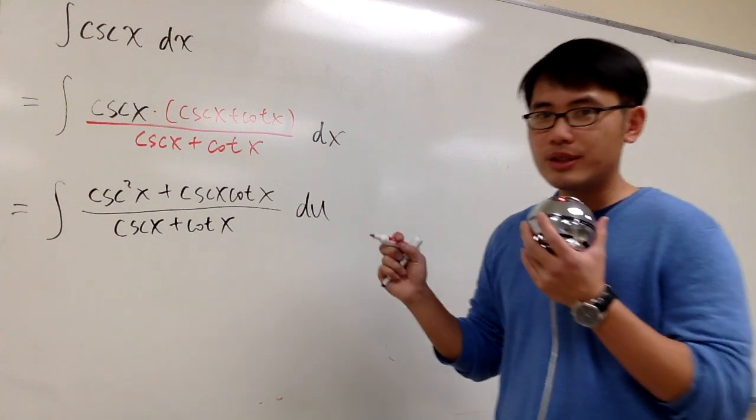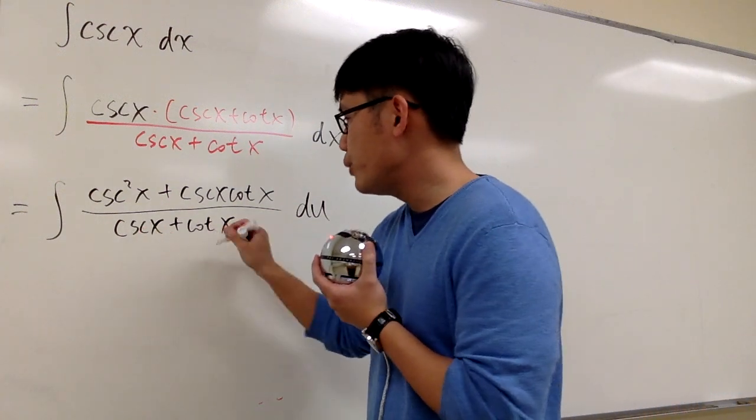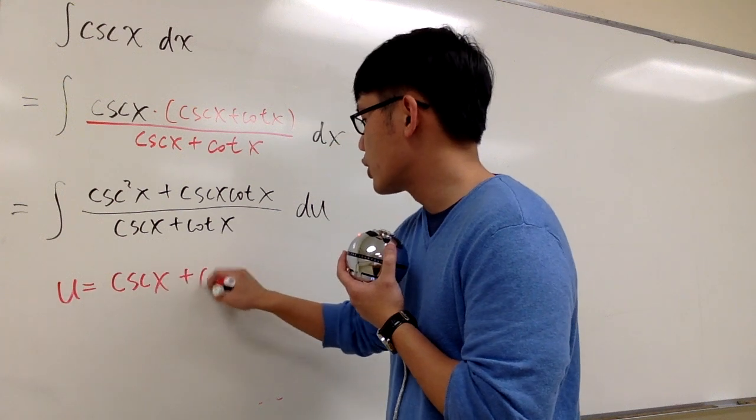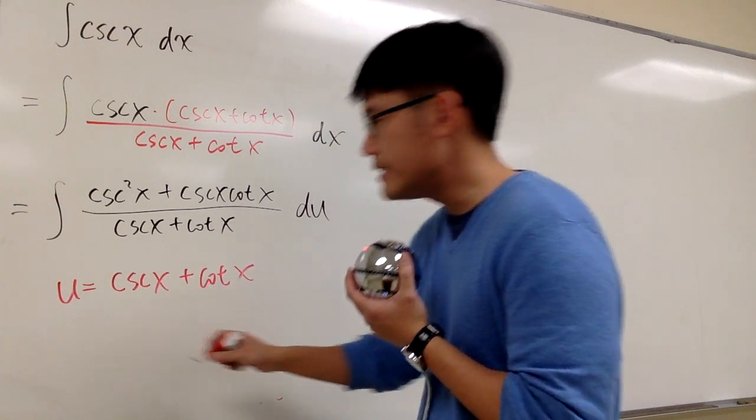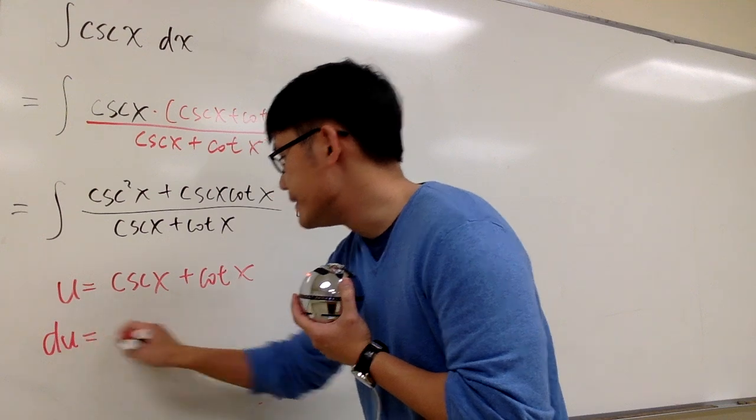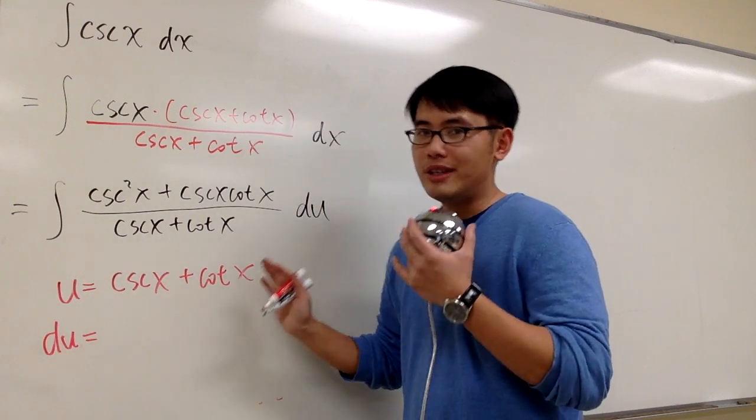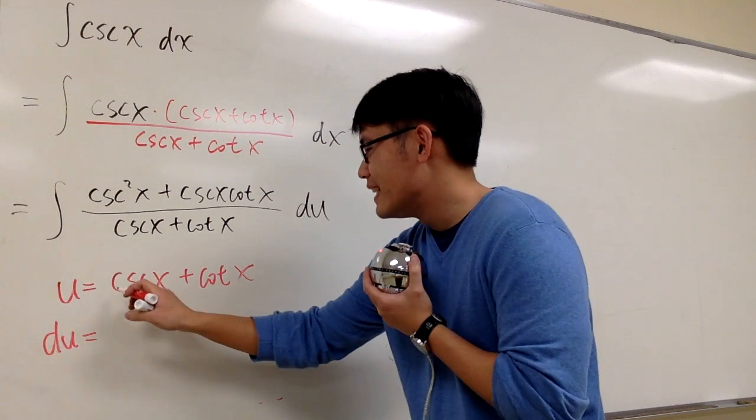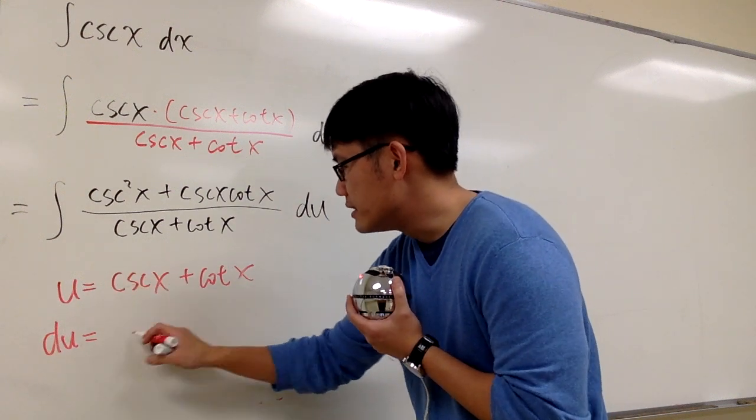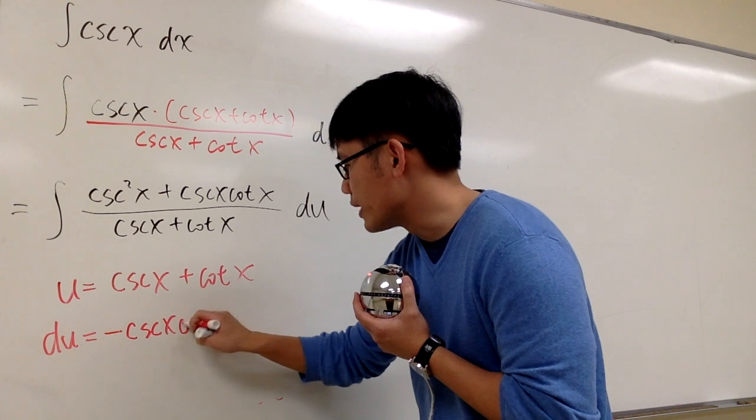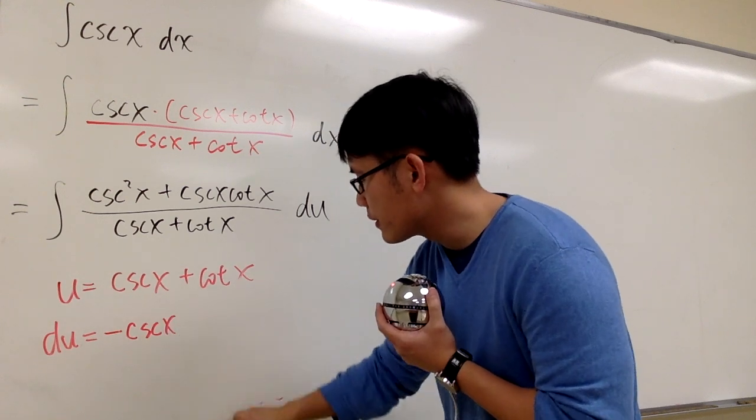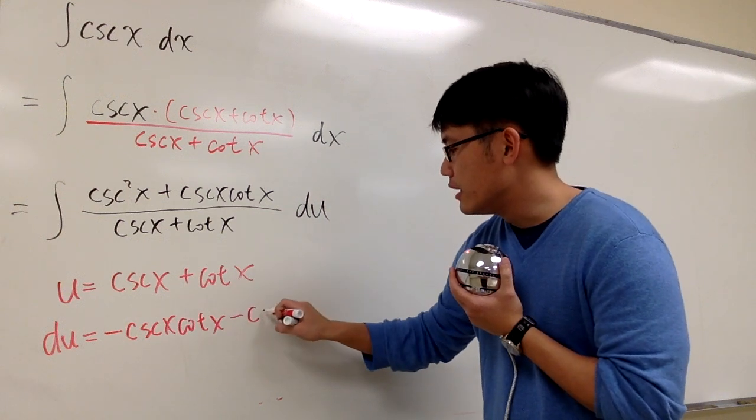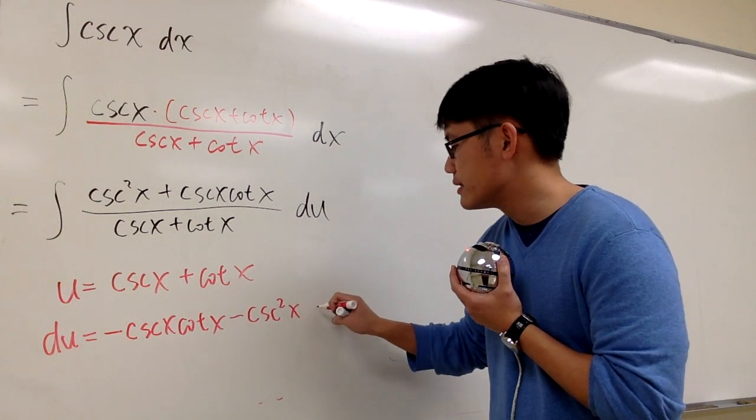And we are going to use u substitution, that u equals to the denominator, u is equal to cosecant x plus cotangent x. Differentiate both sides, we get du is equal to, and this question will really work out your derivatives, because you have to remember these derivatives. du will be derivative of this is negative cosecant x cotangent x. And then the derivative of cotangent x is minus cosecant squared x dx.